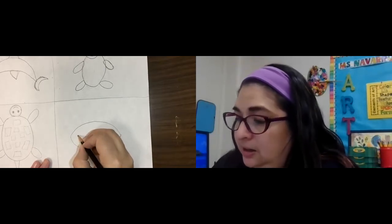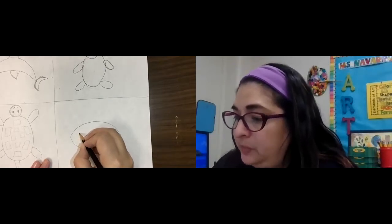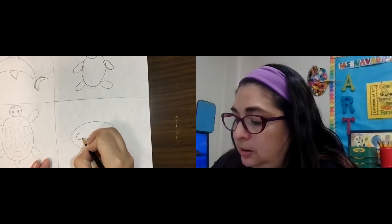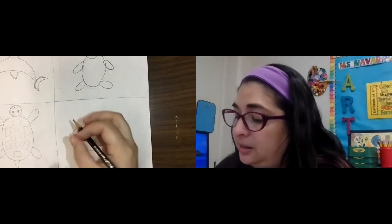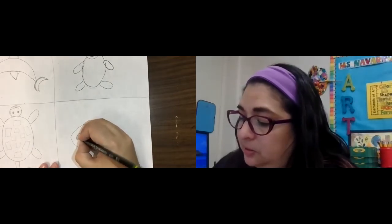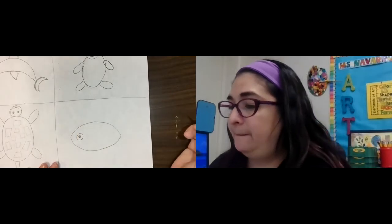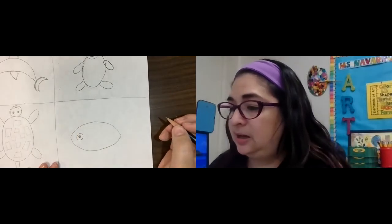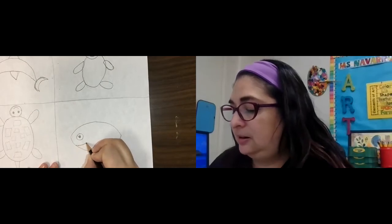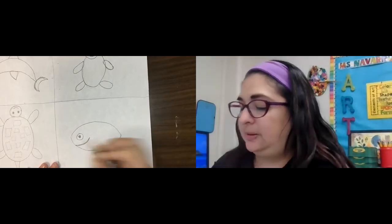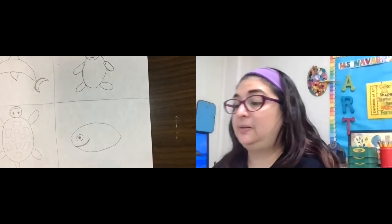Now I'm going to go ahead and add an eye. So to do his eye, I'm going to draw a circle about that size. And then I'm going to put a dot right in the middle. There's his fishy fish eye. And now it's time for his mouth. So I'm going to start here. I'm going to give him a nice big smile. It's a very happy fish.